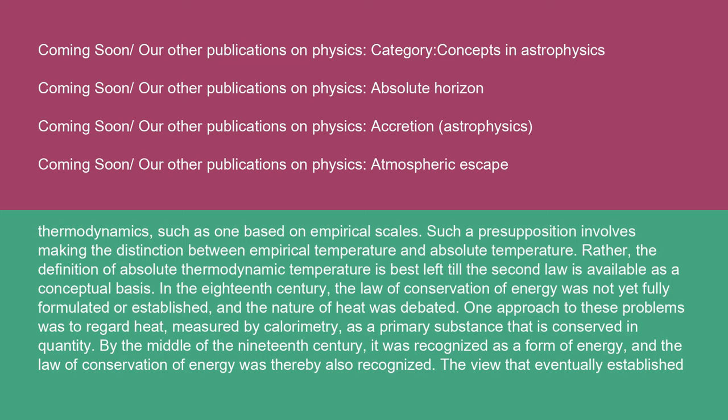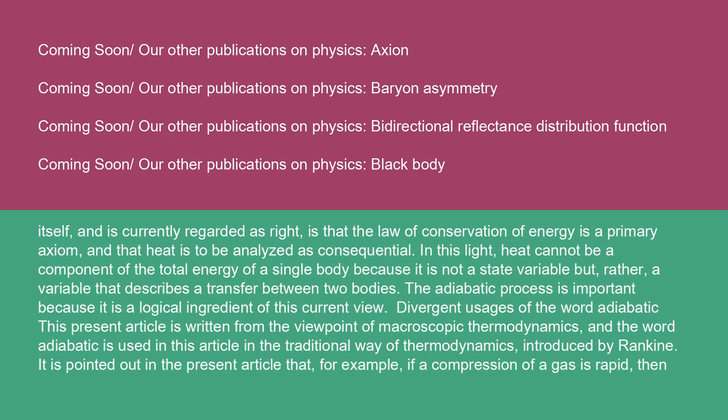One approach to these problems was to regard heat, measured by calorimetry, as a primary substance that is conserved in quantity. By the middle of the 19th century, it was recognized as a form of energy, and the law of conservation of energy was thereby also recognized. The view that eventually established itself is that the law of conservation of energy is a primary axiom, and that heat is to be analyzed as consequential. In this light, heat cannot be a component of the total energy of a single body because it is not a state variable, but rather a variable that describes a transfer between two bodies. The adiabatic process is important because it is a logical ingredient of this current view.